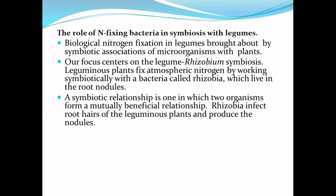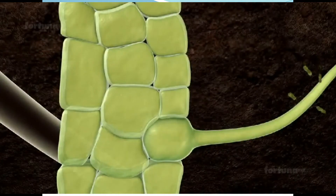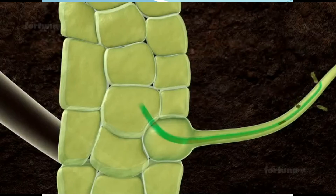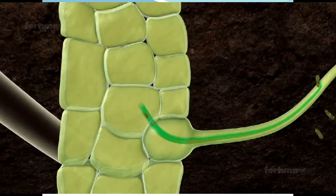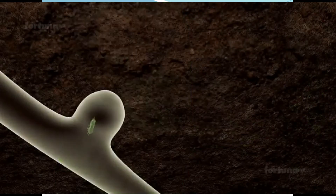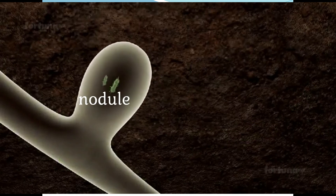A symbiotic relationship is one in which two organisms form a mutually beneficial relationship — that is, a relationship where both the bacteria and the plant benefit. Rhizobia infect the root hairs of leguminous plants and produce nodules. The nodules become the home for the bacteria, where they obtain energy from the host plant and take free nitrogen from the soil and process it into combined nitrogen.